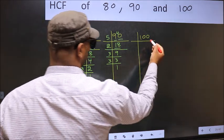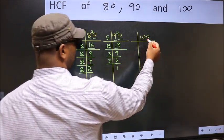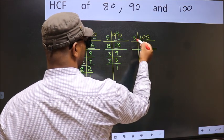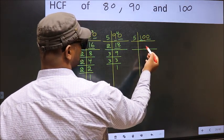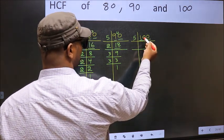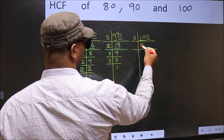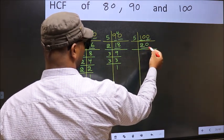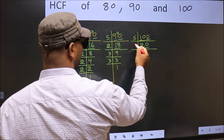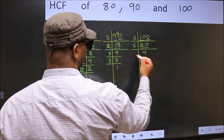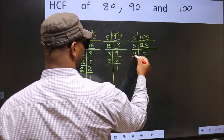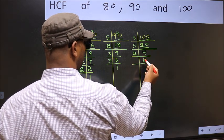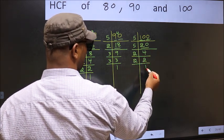Now for 100. The last digit is 0, so we take 5. The first digit is 1, which is smaller than 5, so take the two-digit number 10. In the 5-times table, 5 twos are 10. Bring the 0 down to get 20. Now 20 is 5 fours; 4 is 2 twos. We have 2, which is a prime number, so 2 once 2.